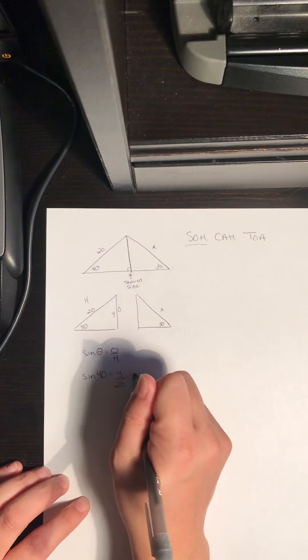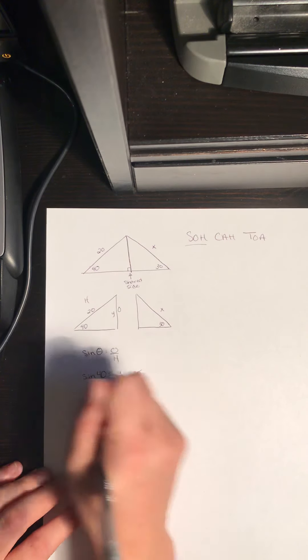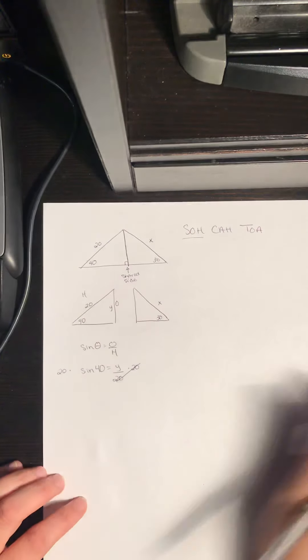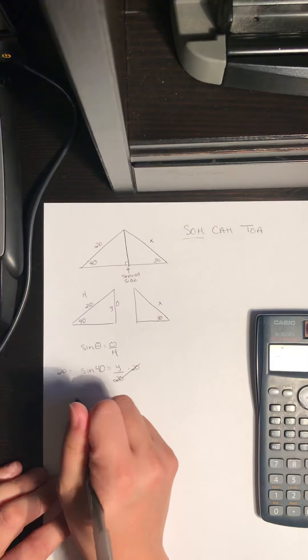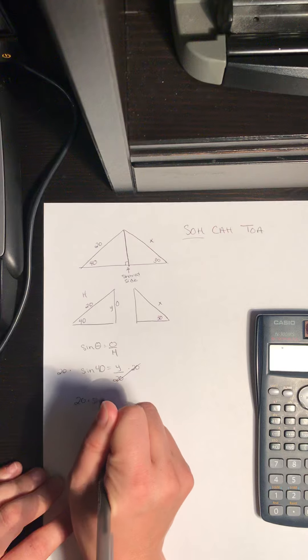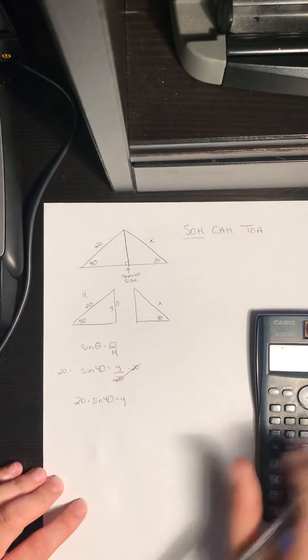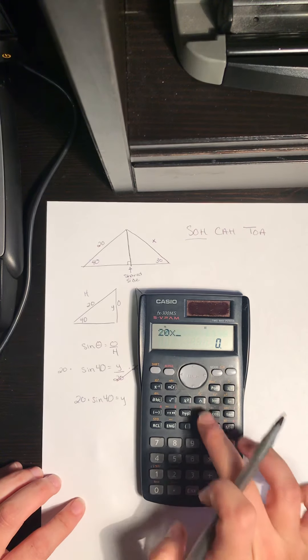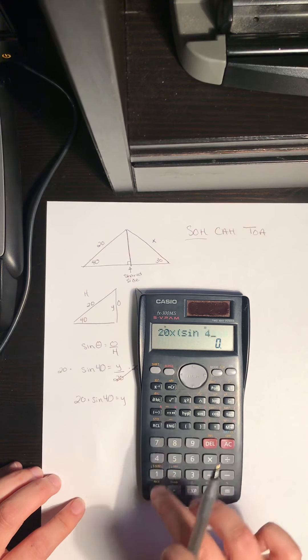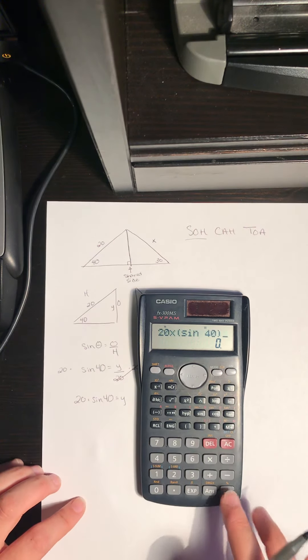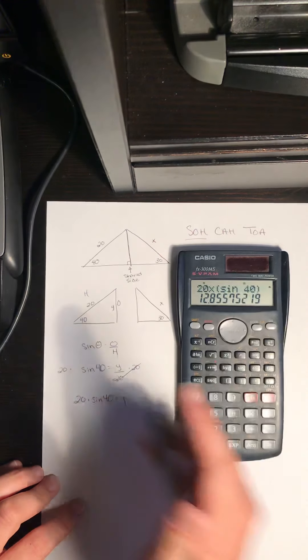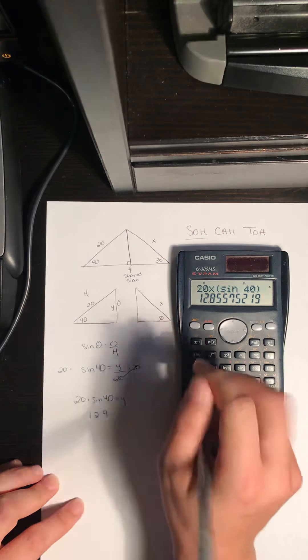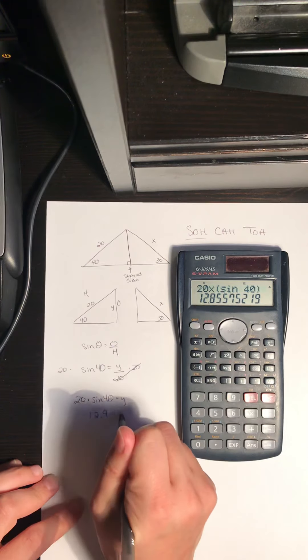Get my variable all by itself and then solve. So it'll be 20 times sine 40 will equal that middle side there. So I can type 20 times sine 40 equals. So 12.9 because I have to round up here equals Y.